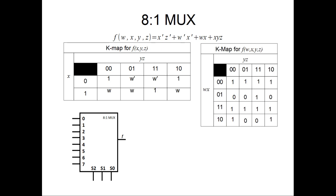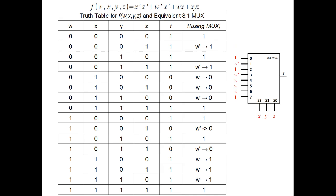After the K-map is full, we now have the appropriate inputs for the 8 to 1 MUX. Here is the truth table for f of wxyz and the equivalent 8 to 1 MUX. Notice that the output of the function and the output of the 8 to 1 MUX are equivalent. Therefore, the 8 to 1 MUX accurately represents the function.